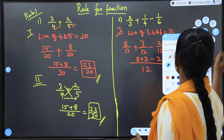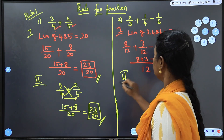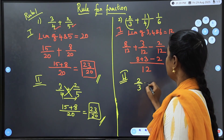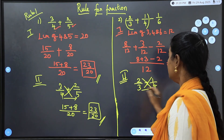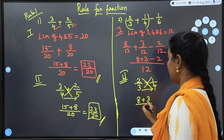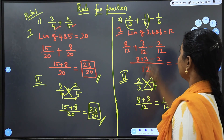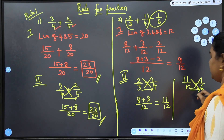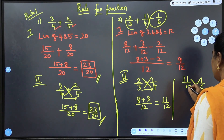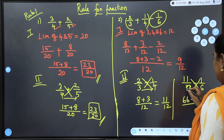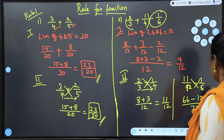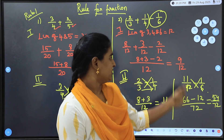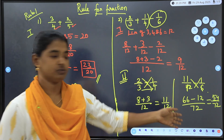You can simplify the answer further. Using the Butterfly method on the same three-fraction problem: first solve 2/3 + 1/4 by cross multiplying to get 11/12, then solve 11/12 − 1/6 by cross multiplying: 66 minus 12 divided by 72 gives 54/72, which simplifies. For more than two fractions, you can use LCM or Butterfly method.